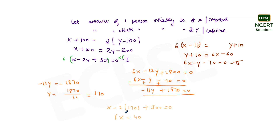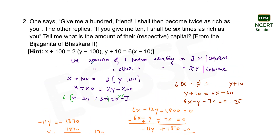This means the initial amount the first person was holding was rupees 40 per capital, and the amount the other person held initially was rupees 170 per capital. This was the solution for question second of exercise 3.7. I hope this question is clear to all of you.